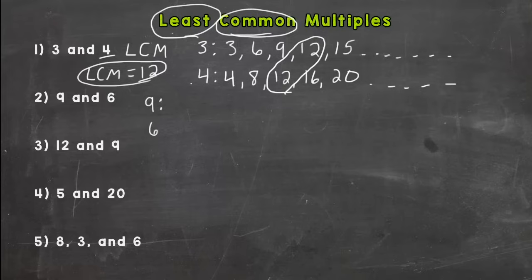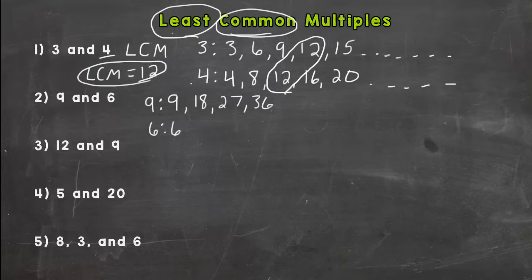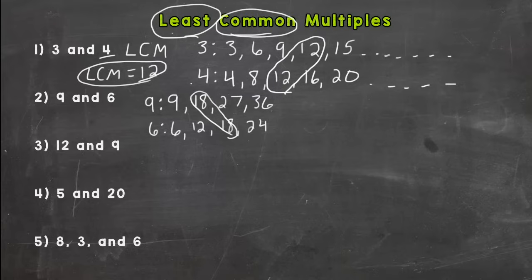We'll make our multiples lists for nine and six. For nine: nine, eighteen, twenty-seven, thirty-six. For six: six, twelve, eighteen, twenty-four. Do we have any in common? Yes — eighteen. Let's see if we have any less than that. It doesn't look like it, so our LCM for nine and six is eighteen.